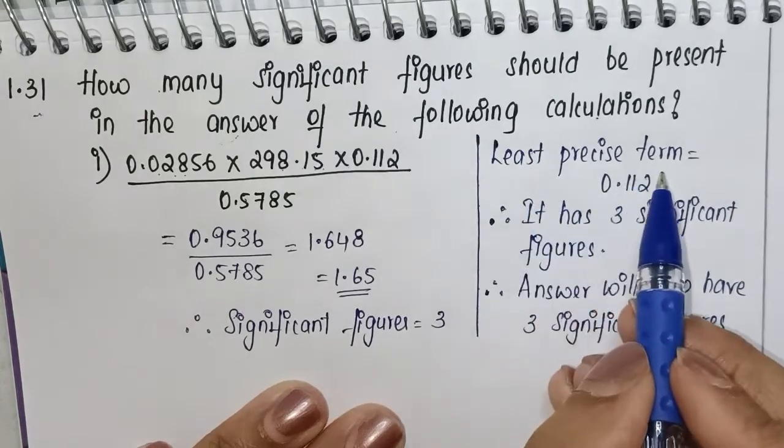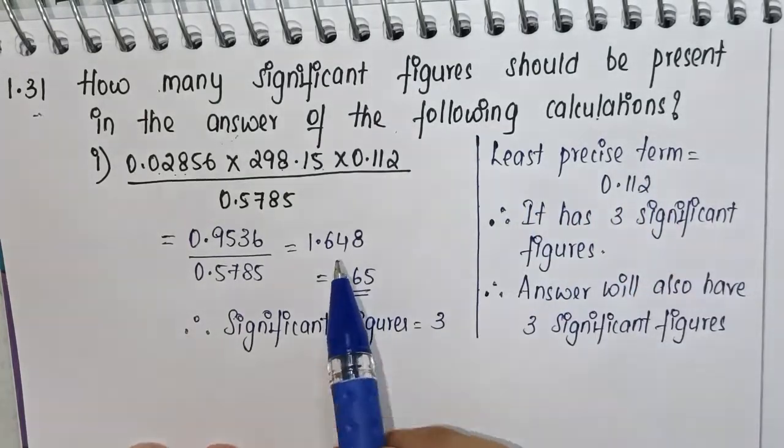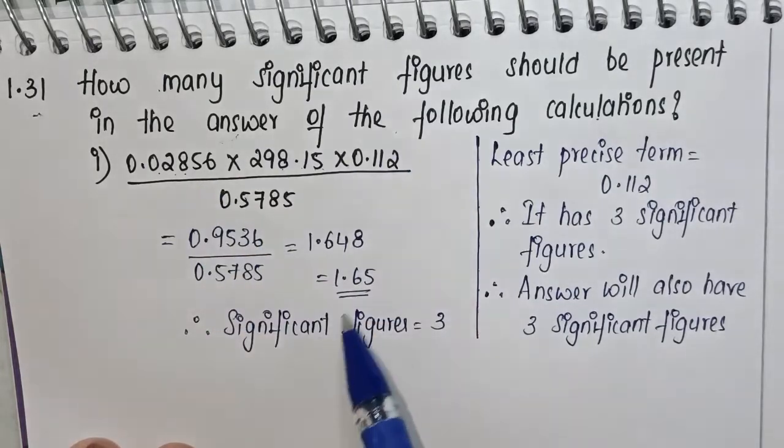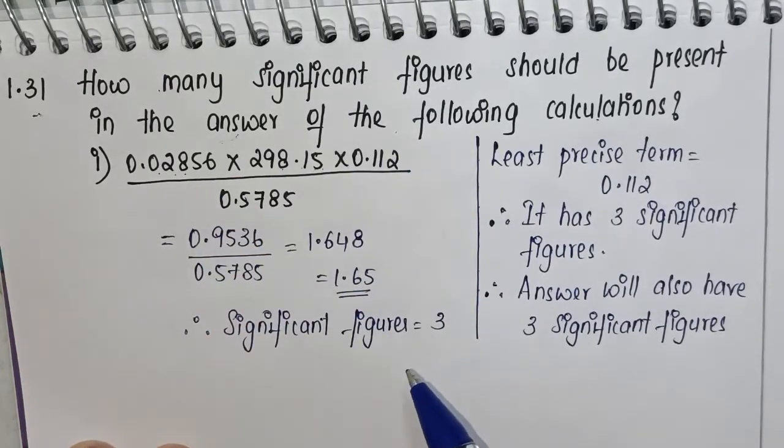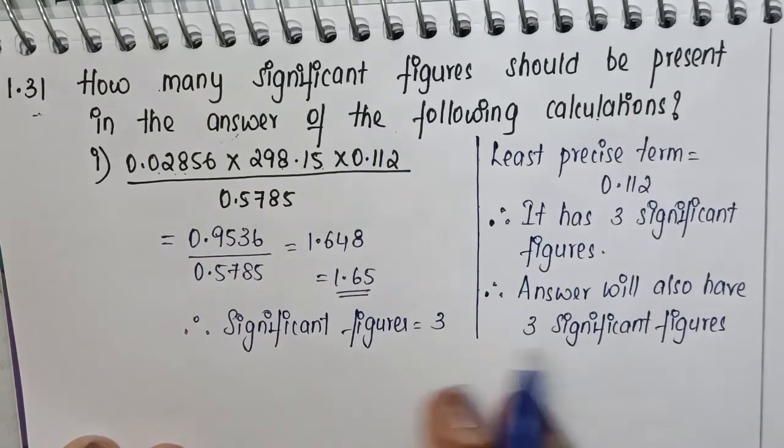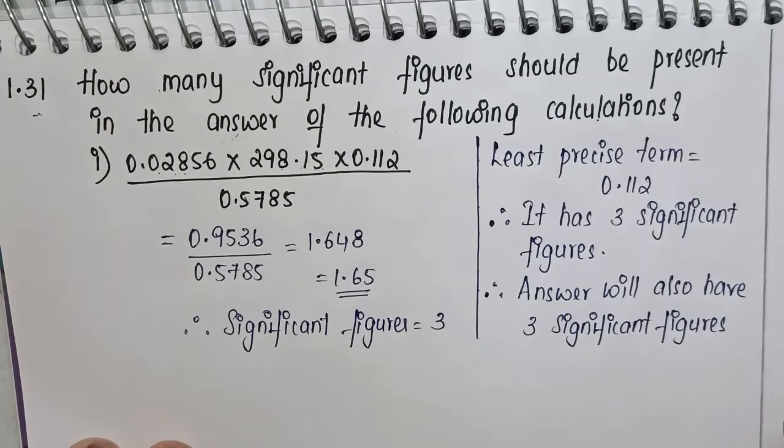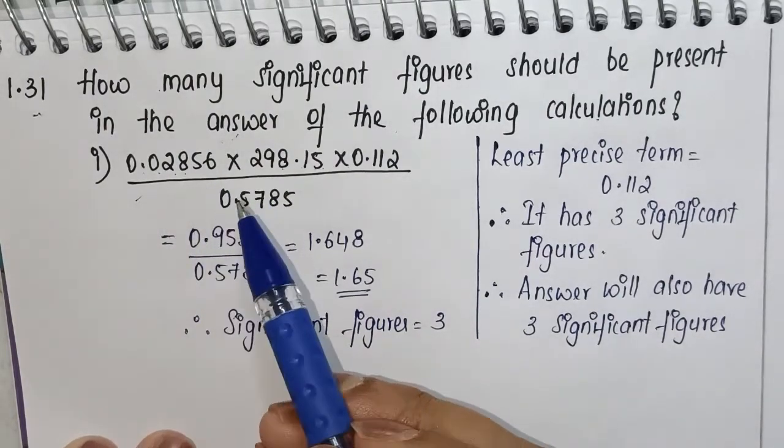Or if you want, you can still do a normal calculation and get your answer and find what the significant figures are. Either way, both are correct. Let's see the second question.